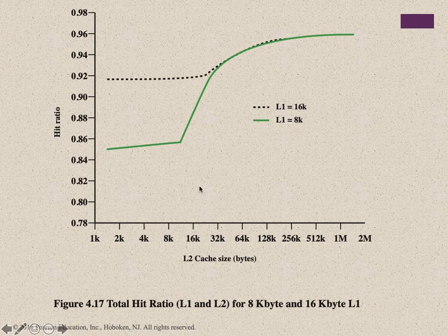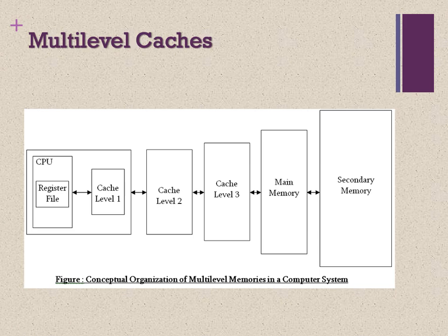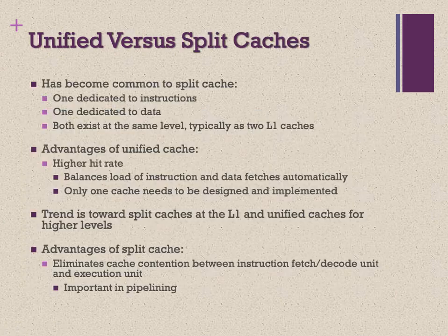After the L2 cache size reaches equal to or greater than the L1 cache, we see performance improvement. This means the L2 cache size must be bigger than L1 cache before you see performance improvement. Inside the CPU we have a register file, then L1 cache, then L2 cache. L2 is normally shared among multiple CPUs. Then we have L3 cache, shared by groups of CPUs depending on processor architecture. Beyond that is main memory and then secondary memory.